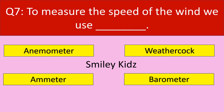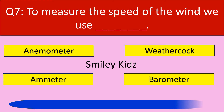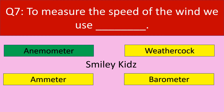Moving to question number 7. To measure the speed of the wind, we use — your options are anemometer, weather cock, emitter, barometer. The correct answer is anemometer. To measure the speed of the wind, we use anemometer.